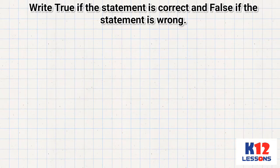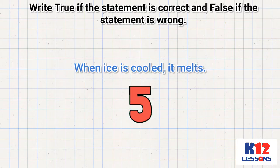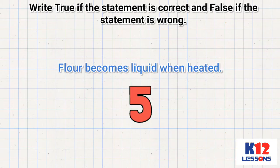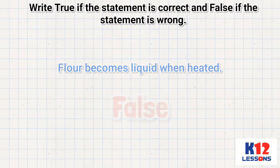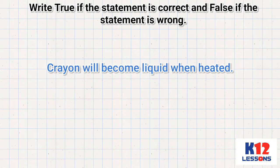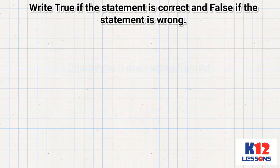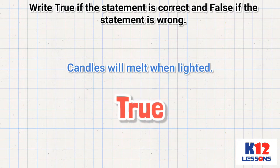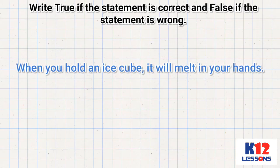Write true if the statement is correct and false if the statement is wrong. When ice is cooled, it melts. Flour becomes liquid when heated. Crayon will become liquid when heated. Candles will melt when lighted. When you hold an ice cube, it will melt in your hands.